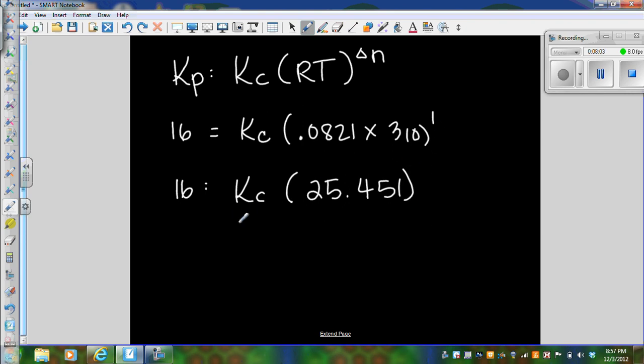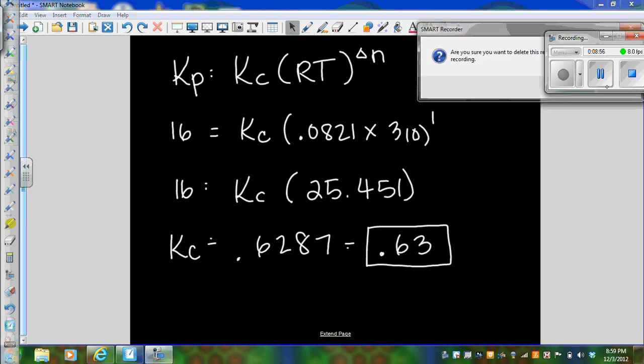I am not doing significant figures yet. I'm going to divide both sides by 25.451 to get Kc by itself. So 16 divided by 25.451 gives me 0.6287. I need to think about significant figures. I ignore temperature. This is a constant, so it has many. This has two. So my answer needs to have two. So it's 0.63. So my constant in terms of concentration is 0.63.